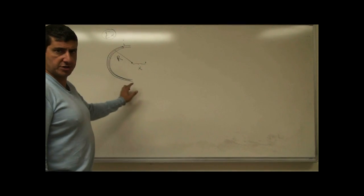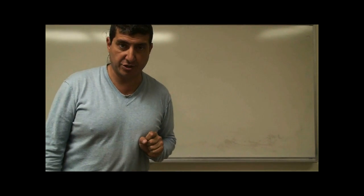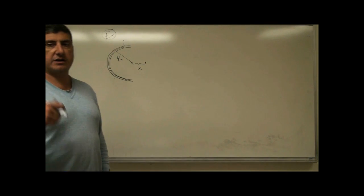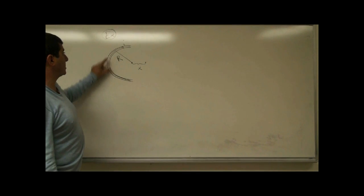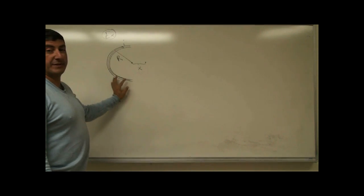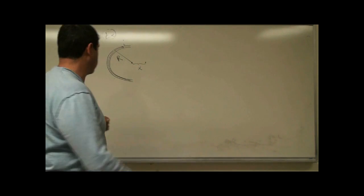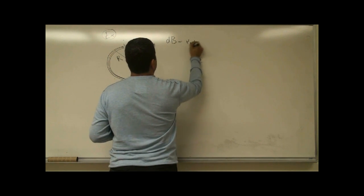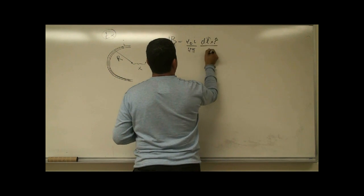I'm going to do an example of finding the magnetic field of a semi-circular current-carrying wire at a point that is not at the center. Let's say the point is a certain distance x away from the center. Previously I've shown how to do this for the electric field, so now we're going to do it for magnetic field. We start with the Biot-Savart law: dB equals mu-zero i over four pi, dL crossed into r-hat over r squared.